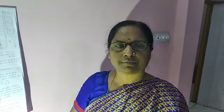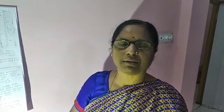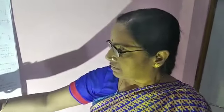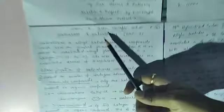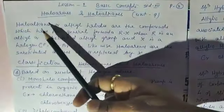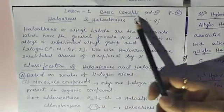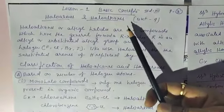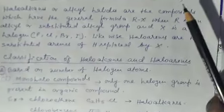Let me start our main topic. The chapter is Haloalkanes and Haloarenes, which is divided into many subtopics. The first subtopic of this chapter is classification — the basic concept of what Haloalkanes and Haloarenes are.